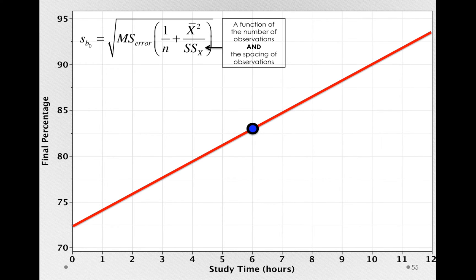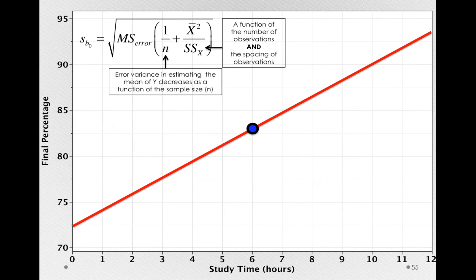Now, you'll also notice the 1 divided by n. That's representing the fact that error variance in estimating the mean of y decreases as a function of sample size. Remember, that's from the standard error of the mean. So, sigma squared over n was the variance of our sample mean. So as we increase the number of people, we can better estimate where the mean of y is. Now let's see why this matters in this case.